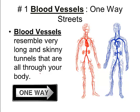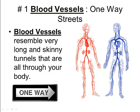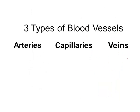Blood vessels are basically one-way streets. They resemble long, skinny tunnels and are found all throughout your body. The three types of blood vessels are your arteries, your capillaries, and your veins. Arteries send blood to the capillaries, and the capillaries send blood to the veins. Blood always flows in that direction — it never goes back the other way.